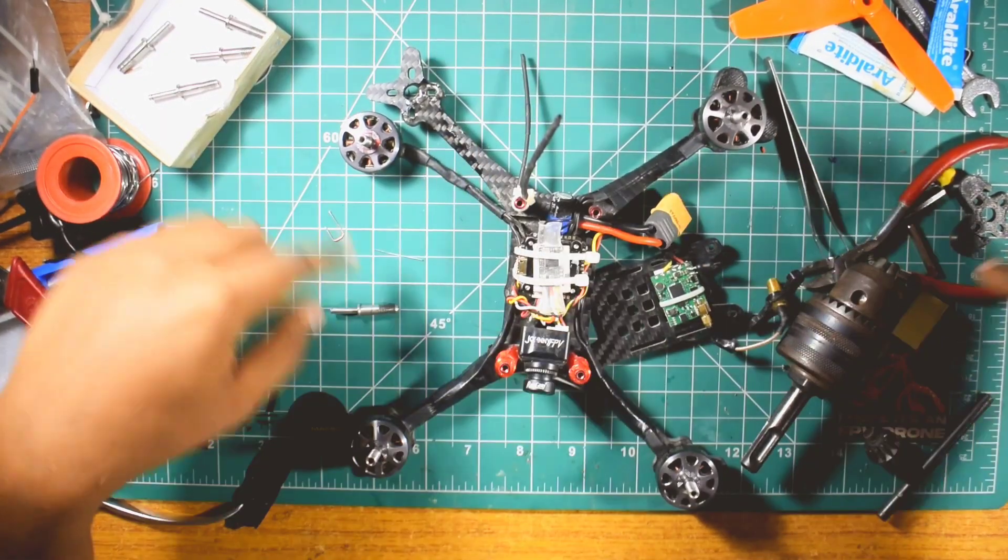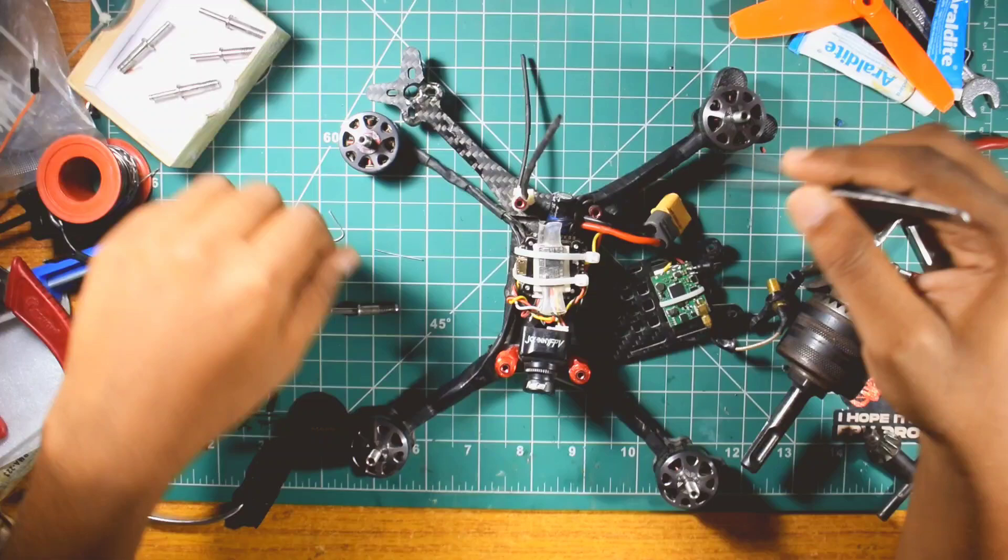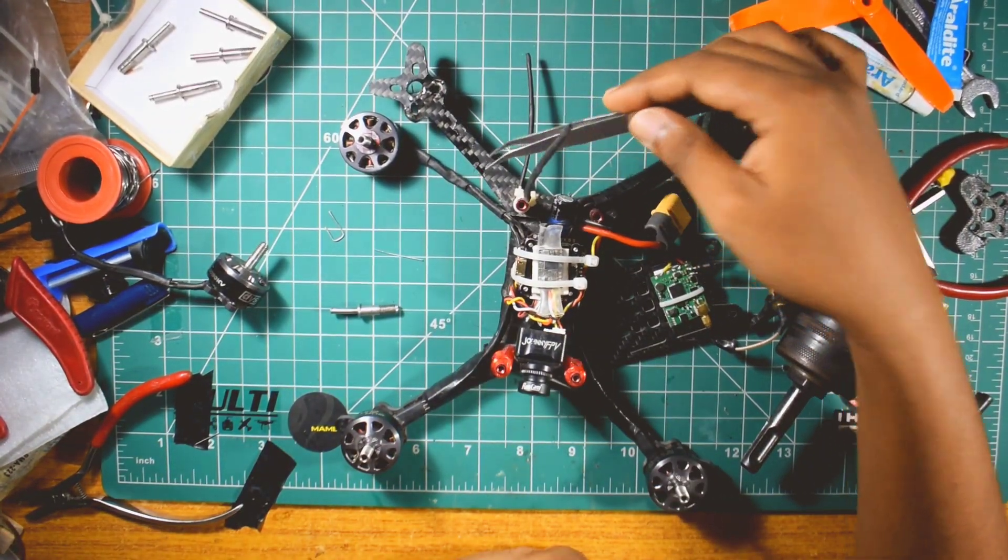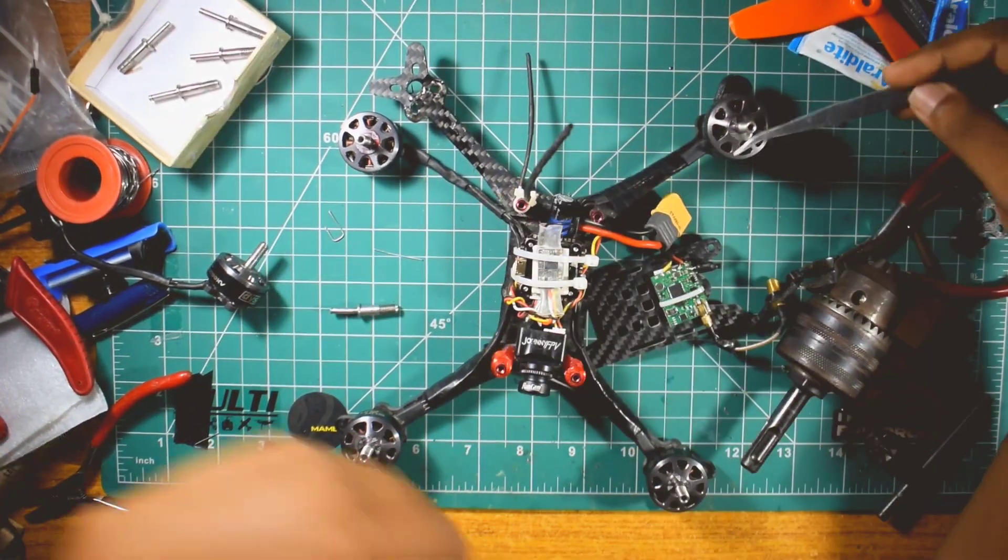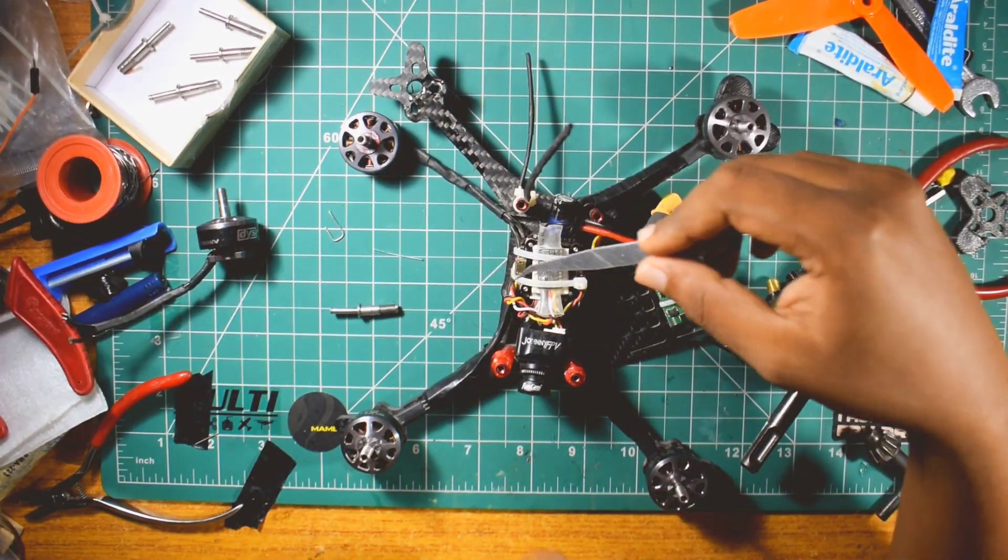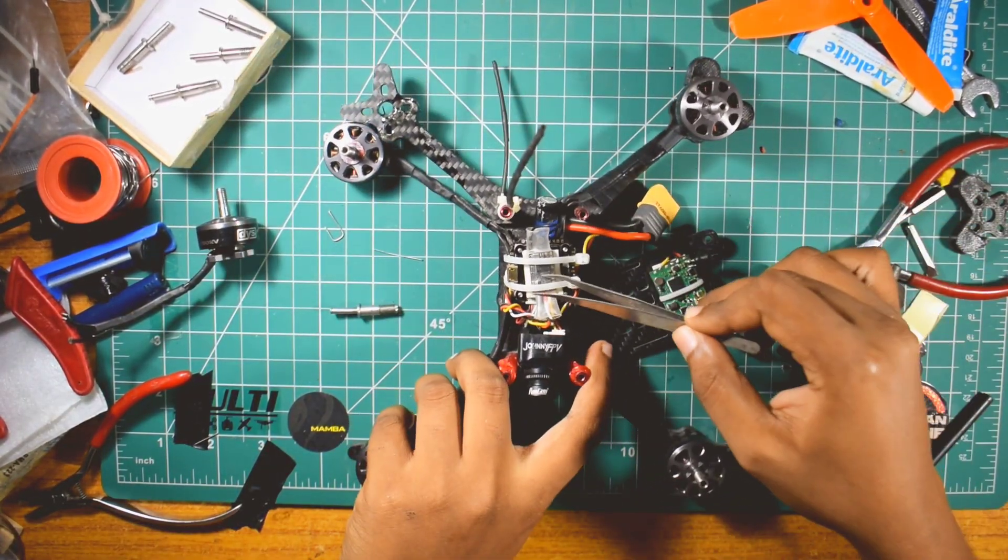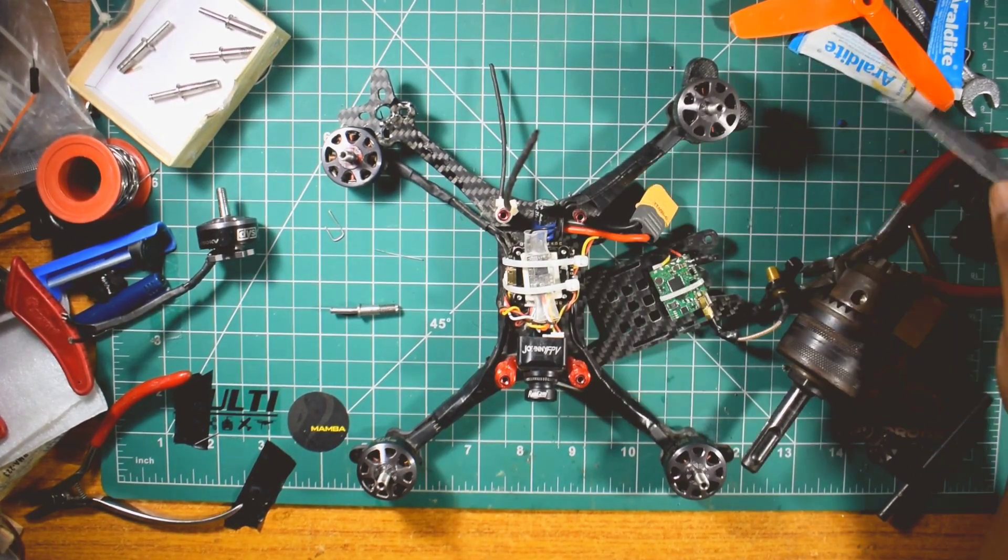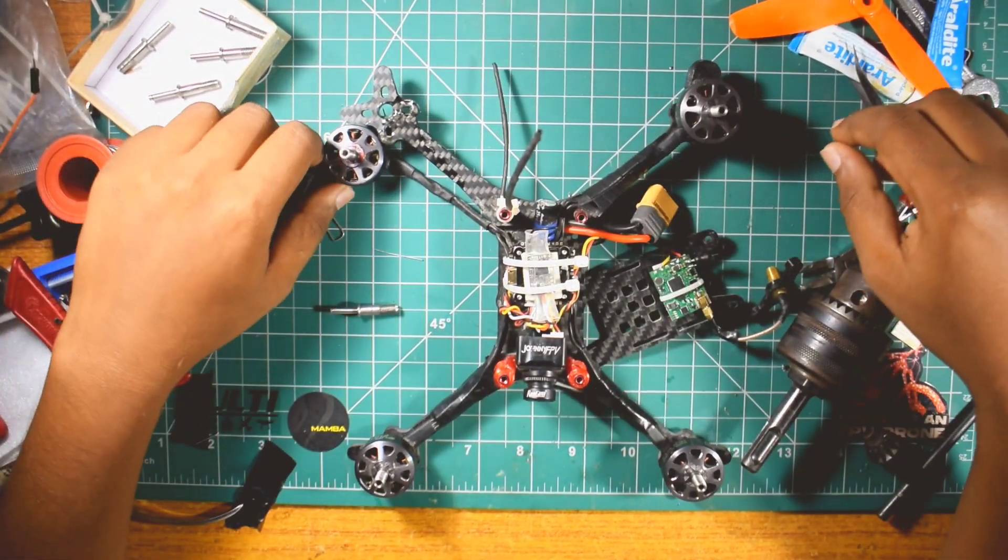This right here is my first build. It's a budget friendly quad. It has Floss V2 frame, DYS Sunfront 2750KV motors, and Mabaya F405 Mk3 stack, Crossfire receiver, AKK Race VTX. Let me know what you think about this build in the comments.